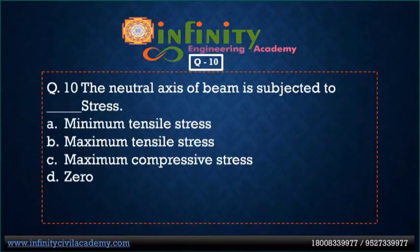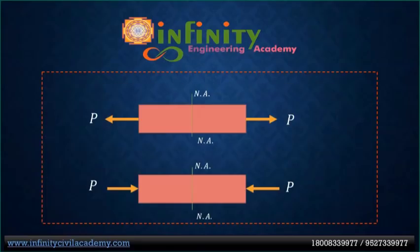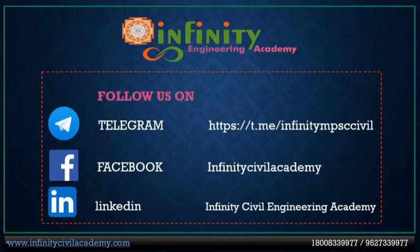Question 10: The neutral axis of a beam is subjected to — option A: minimum tensile stress, option B: maximum tensile stress, option C: maximum compressive stress, option D: zero stress. Option D is correct — zero stress. In a beam subjected to bending, tensile and compressive stresses develop on either side, but the neutral axis is the plane where no stress is developed.